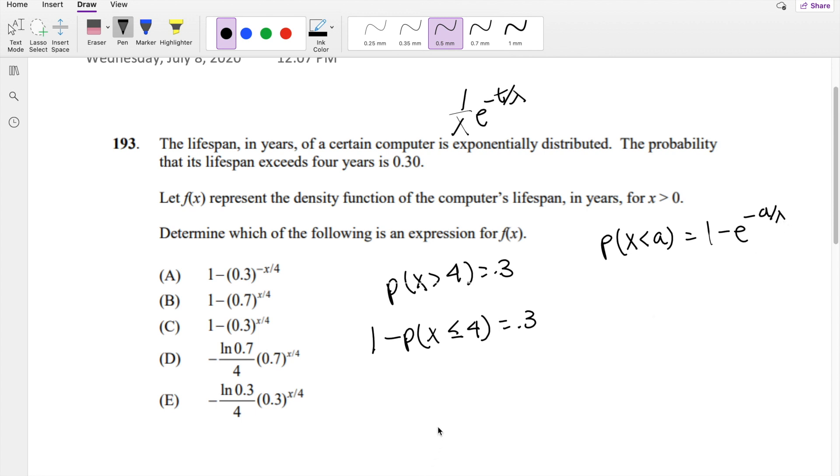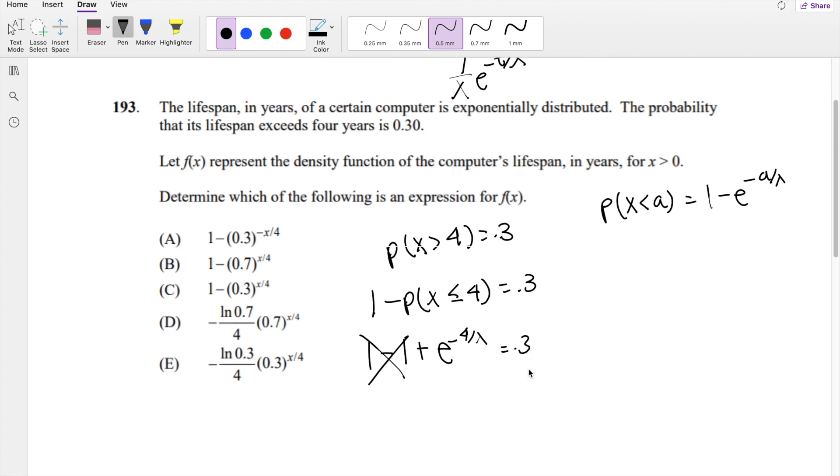So knowing this, we can actually just find this real quick. So this is equal to 1 minus 1 plus e to the negative a, which in our case is 4, 4 over lambda is equal to 0.3. So these two parts cancel out, and you get this part right here.